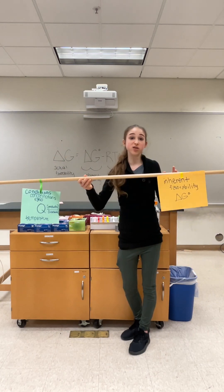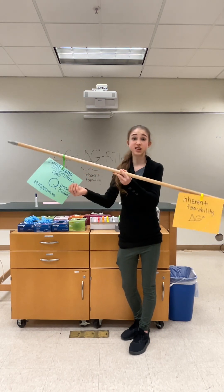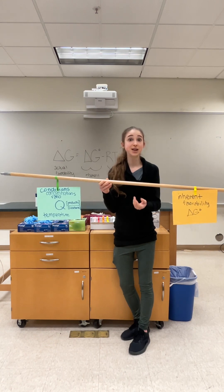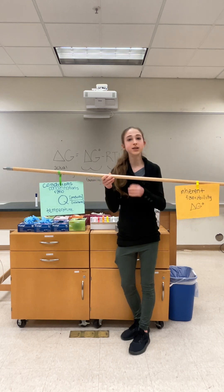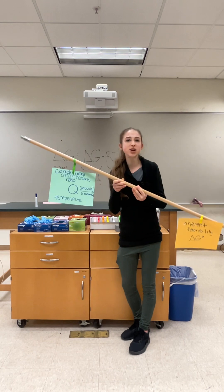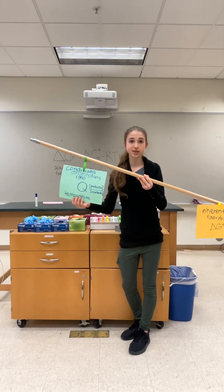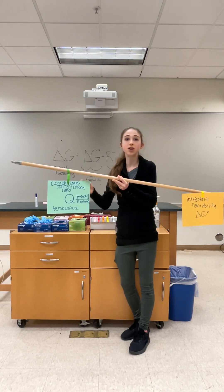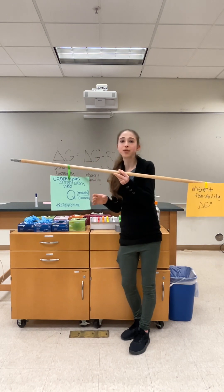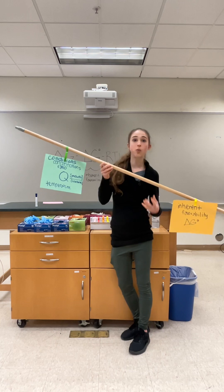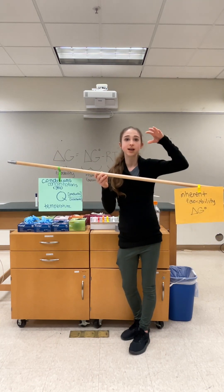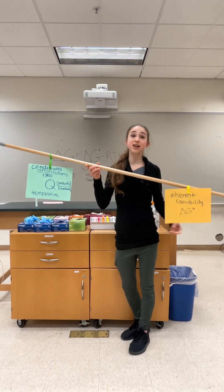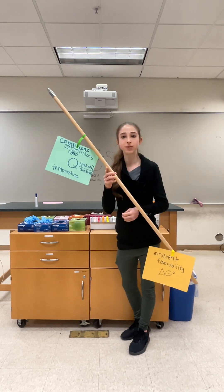Now imagine that we had a more neutral delta G naught — something closer to zero. In this case, a small change in concentration can make a really big difference. So these are the sorts of reactions that we can easily reverse. A lot of the reactions we'll see in our biochemical pathways are of this sort — reactions where we have a pretty small delta G naught, so we can go one way or the other by controlling the concentrations. When it comes to wanting a big power boost, though, you really do want that big negative delta G to drive the reaction forward past that step.